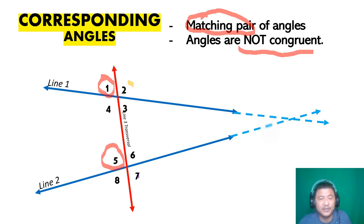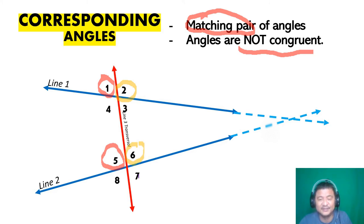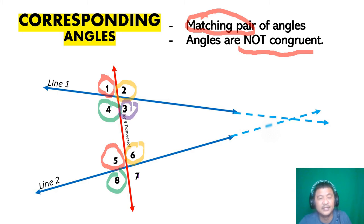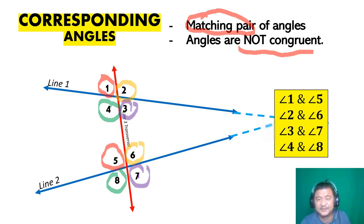Which angle corresponds to angle two? It's angle six — upper right side. Which corresponds with angle four? Angle eight. And which angle corresponds with angle three? Angle seven. Here is the final list of corresponding angle pairs.